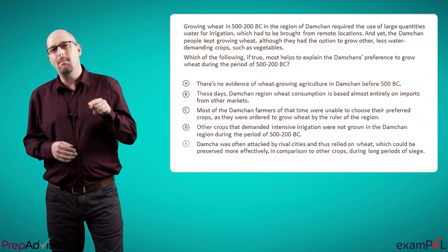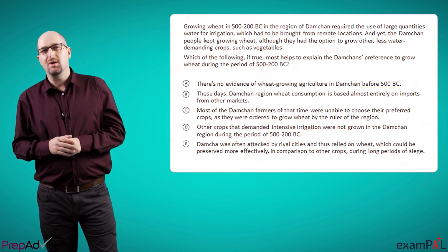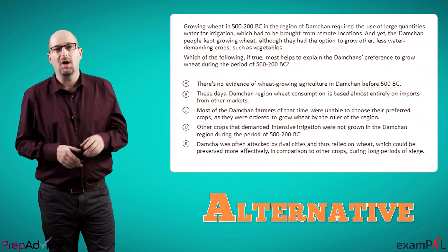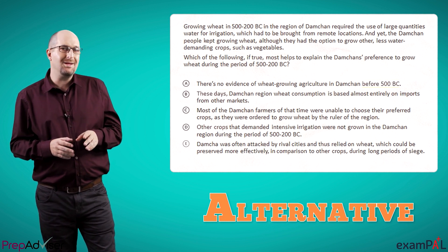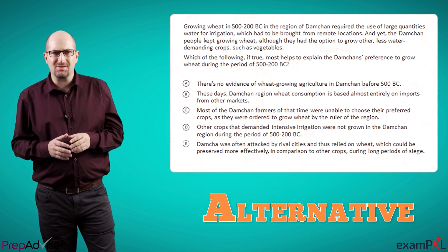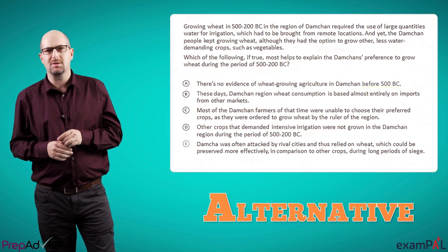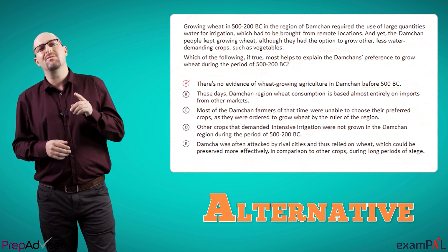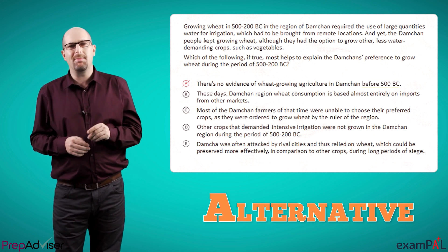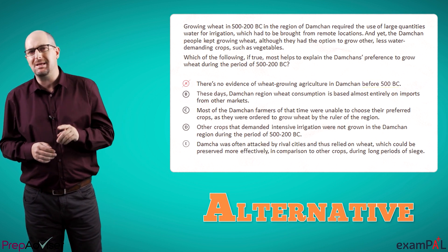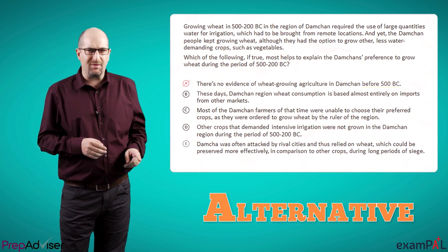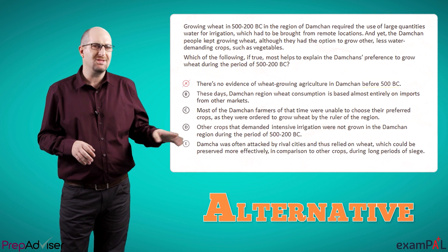Here, we're being asked to identify a solution for a mysterious phenomenon. This question requires the alternative approach of using the answers. It's not immediately obvious what the answer should be, so it seems to make sense to compare the answers — but let's do so critically, of course. A is irrelevant because it involves something which happened before the period we're discussing. We're talking about 500 to 200 BC — that's 500 to 200 before Christ — so before 500 BC is out of our range.